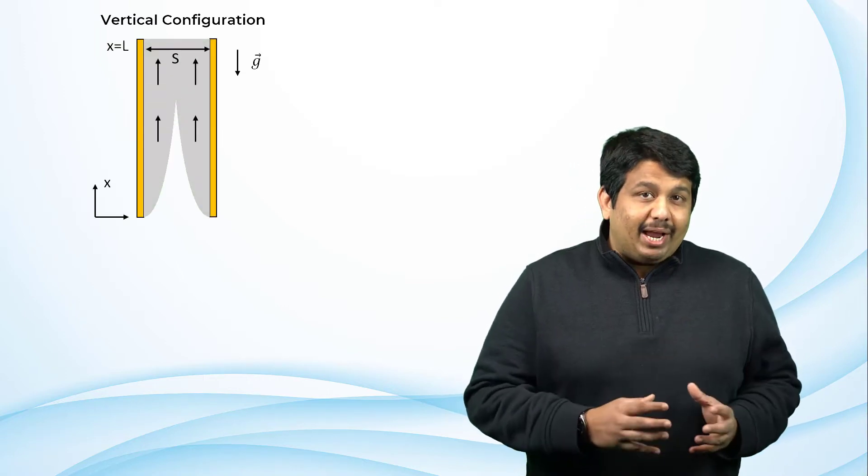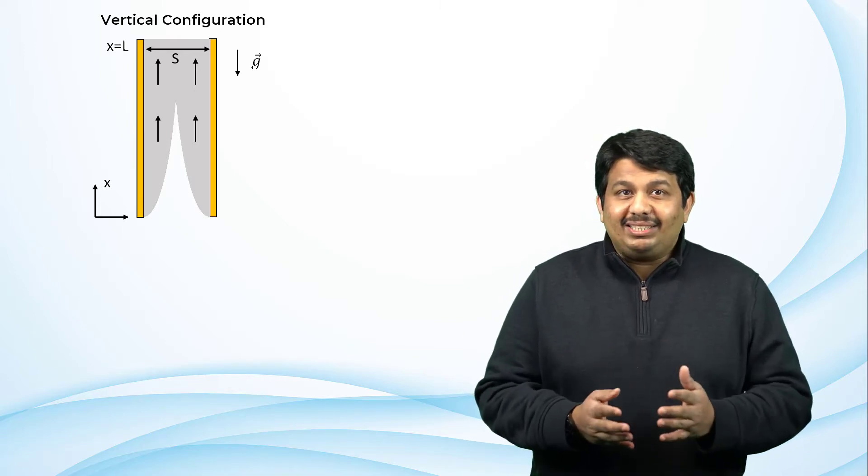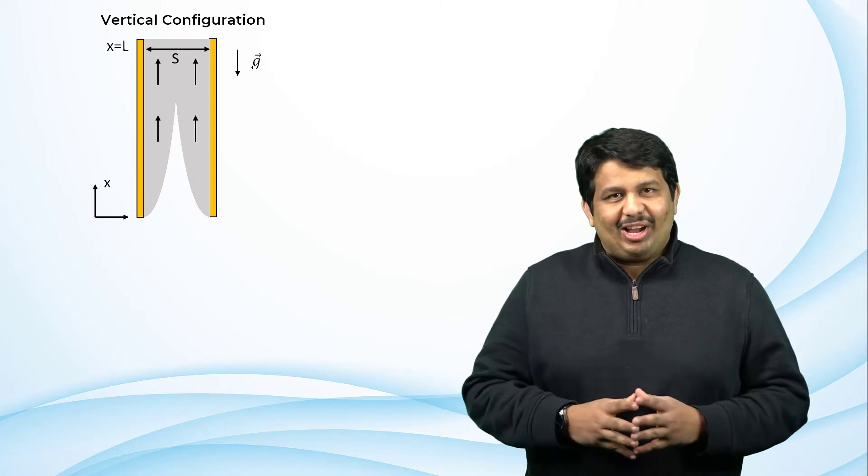Based on their orientation, a parallel plate configuration can either be categorized as vertical or inclined. In a vertical configuration, the direction of the buoyancy force is vertical, and a fluid flow is established in this vertical or streamwise direction.